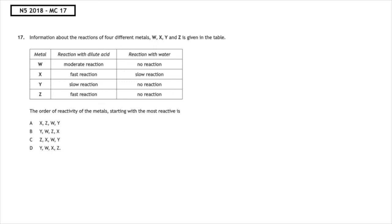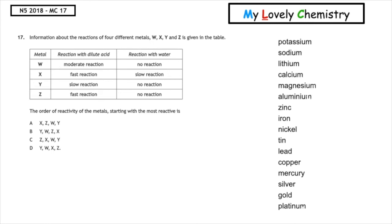Now we remember the most reactive metals will react with water first. So we look at the column which says reaction with water. We can see that the only one that has a reaction is X. This means that this metal must be the most reactive.